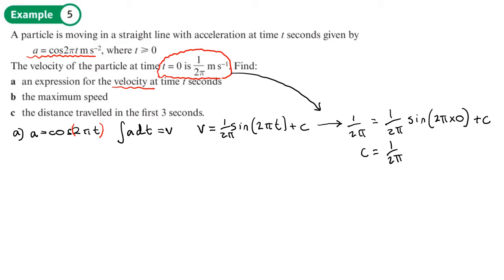So our final expression for the velocity is v = (1/(2π)) sin(2πt) + 1/(2π) meters per second.